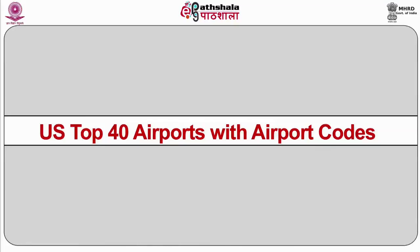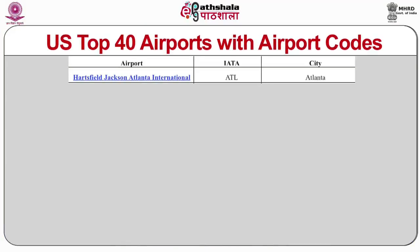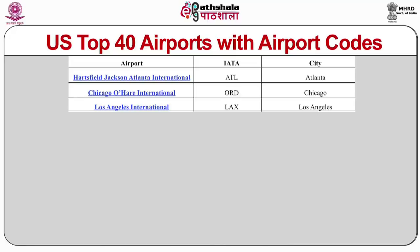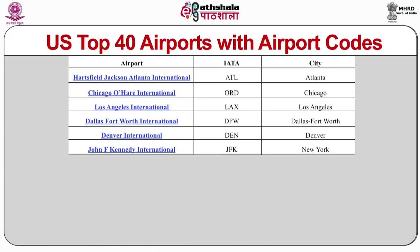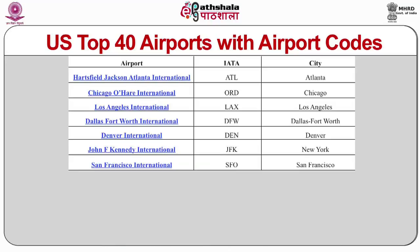Let us discuss the US top 40 airports with airport codes. The table depicts the top 40 airports of the USA with their ITA assigned codes and the city in which they are located. Hartsfield-Jackson Atlanta International Airport: ATL, Atlanta. Chicago O'Hare International Airport: ORD, Chicago. Los Angeles International Airport: LAX, Los Angeles. Dallas-Fort Worth International: DFW, Dallas-Fort Worth. Denver International: DEN, Denver. John F. Kennedy International Airport: JFK, New York. San Francisco International Airport: SFO, San Francisco.